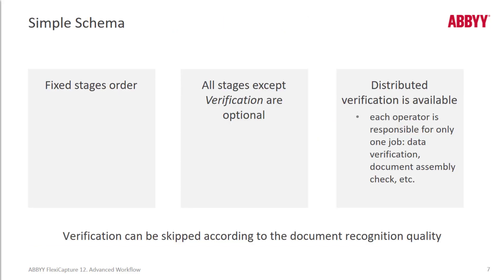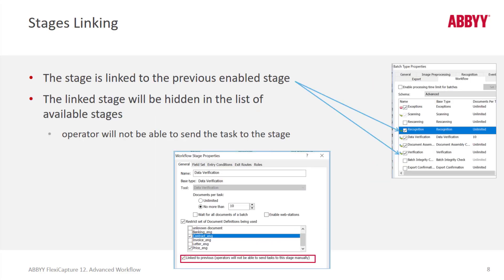The simple schema doesn't allow you to rearrange stage orders. All stages except the verification stage are optional. You should note that verification can always be skipped according to document recognition quality. You can see some green arrows and icons that show stage linking, where a certain stage is linked to the previous enabled stage. You also have the option to click a checkbox on a given stage, where operators won't then be able to send the task to that stage manually.